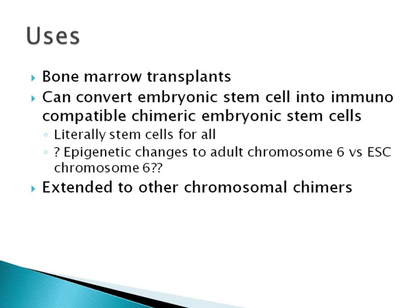There may still be one problem though. Adult chromosome 6 may be different from embryonic stem cell chromosome 6 in terms of epigenetic changes. Possibly, we may be able to reprogram the adult chromosome 6 into its embryonic state in the future. We can also extend this method of creating chimeric cells to other chromosomes too, and not limit ourselves to chromosome 6.